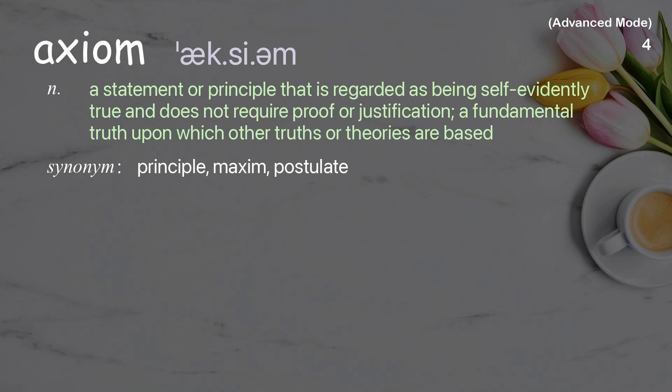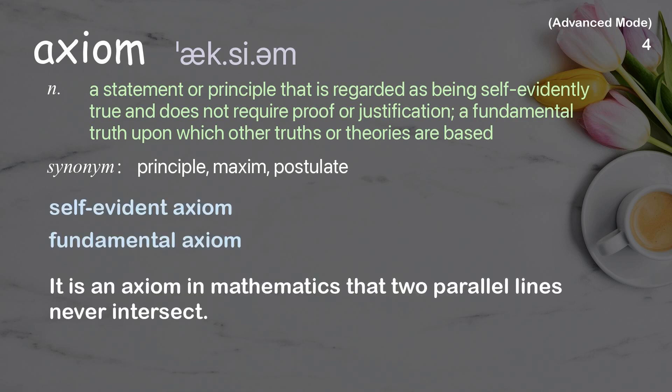Axiom: a statement or principle that is regarded as being self-evidently true and does not require proof or justification; a fundamental truth upon which other truths or theories are based. Examples: self-evident axiom, fundamental axiom. It is an axiom in mathematics that two parallel lines never intersect.